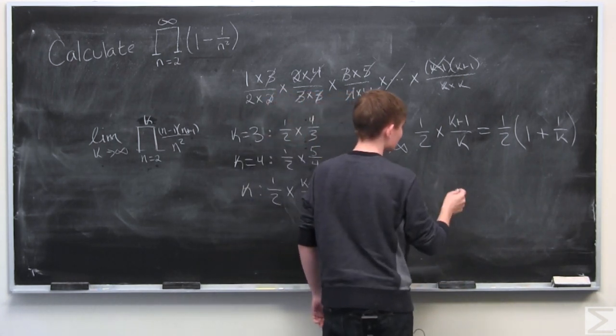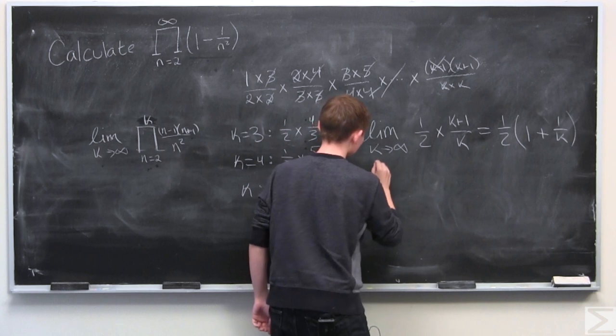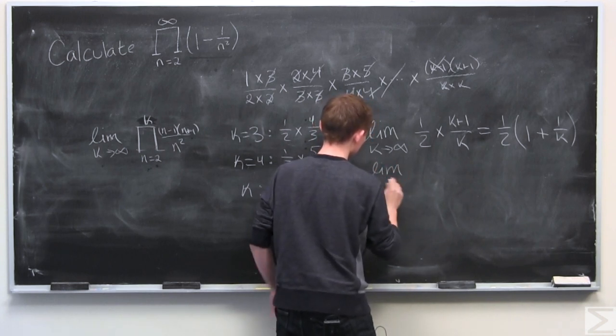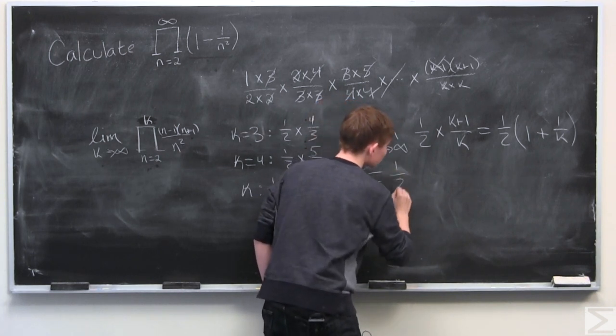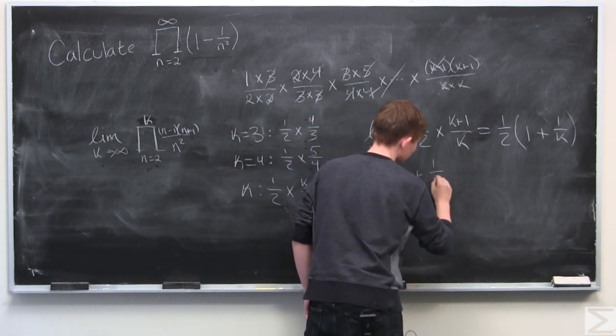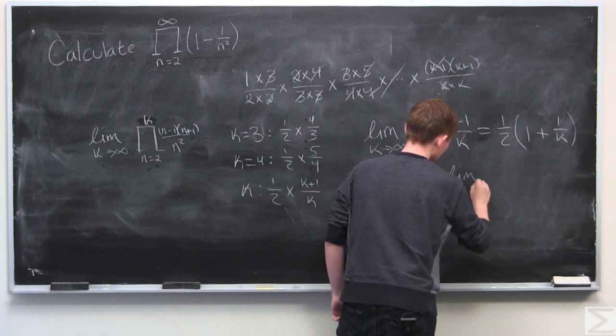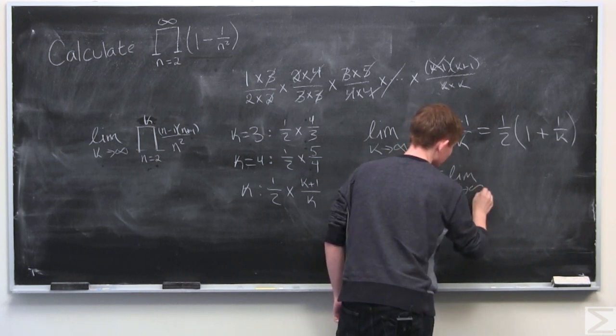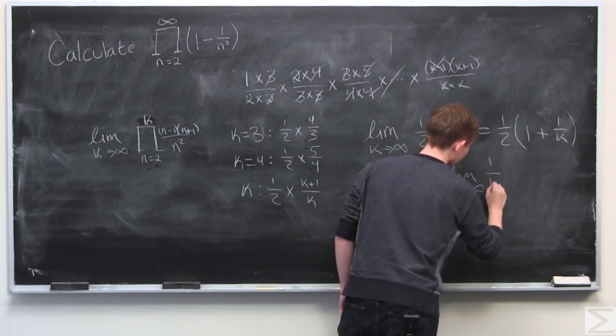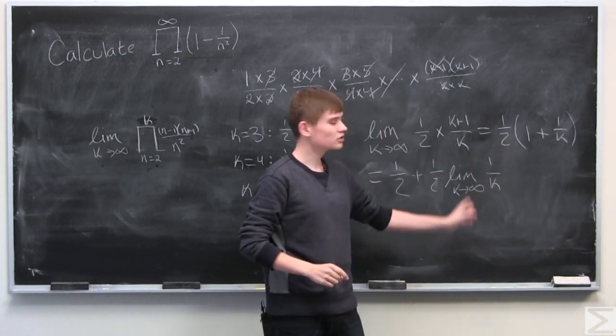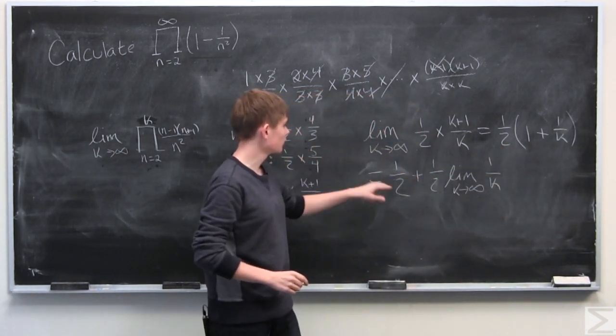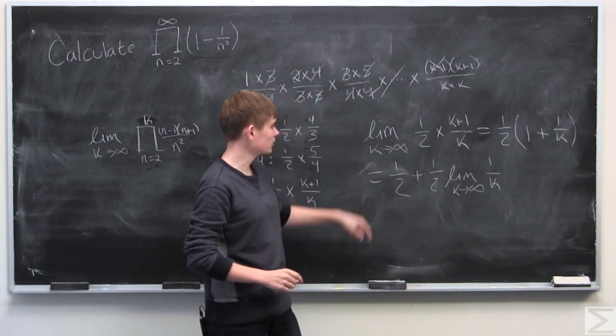And we can simplify this once more. So this is equal to 1 half plus 1 half times the limit as k approaches infinity of 1 over k, which I just distributed out the 1 half and then took the 1 half out of the limit.